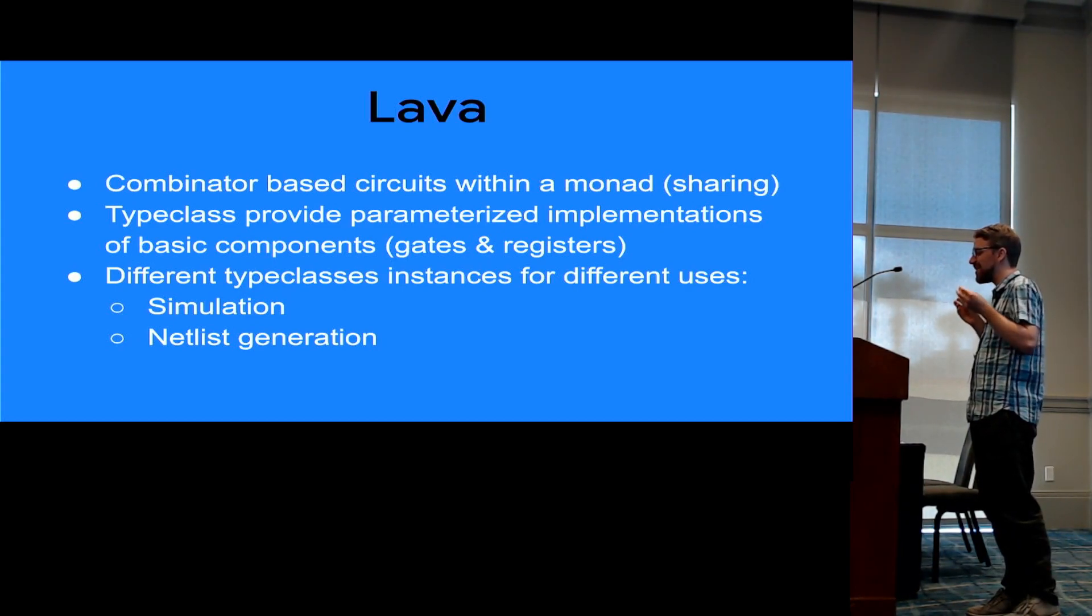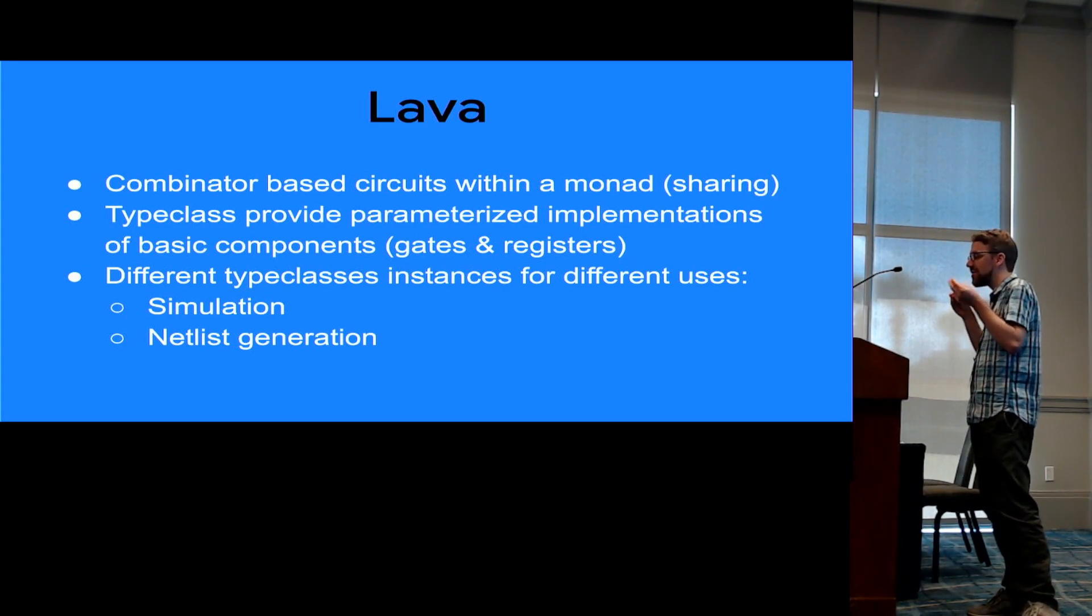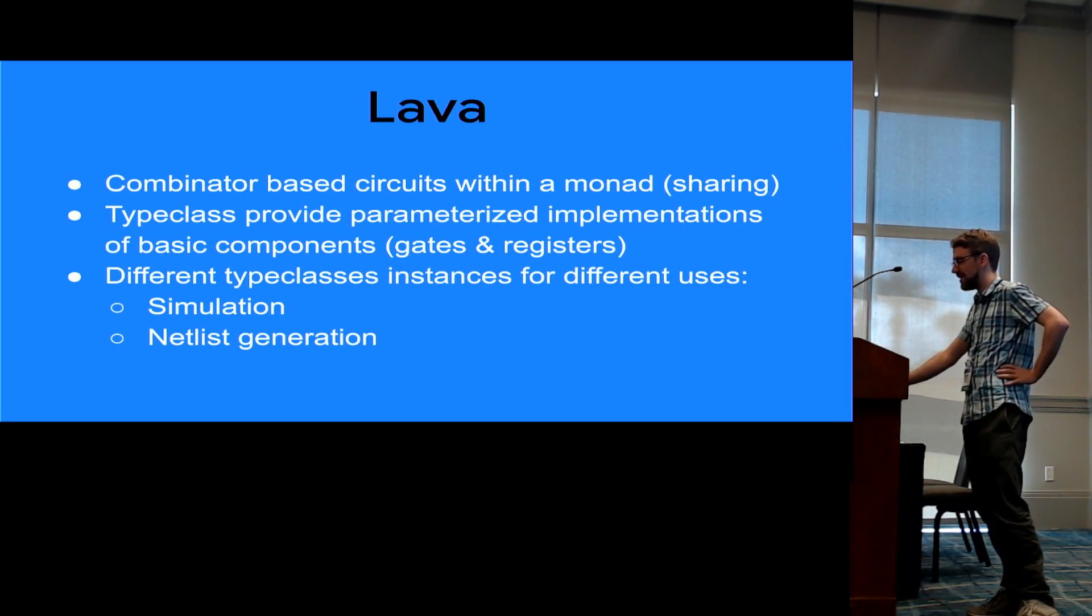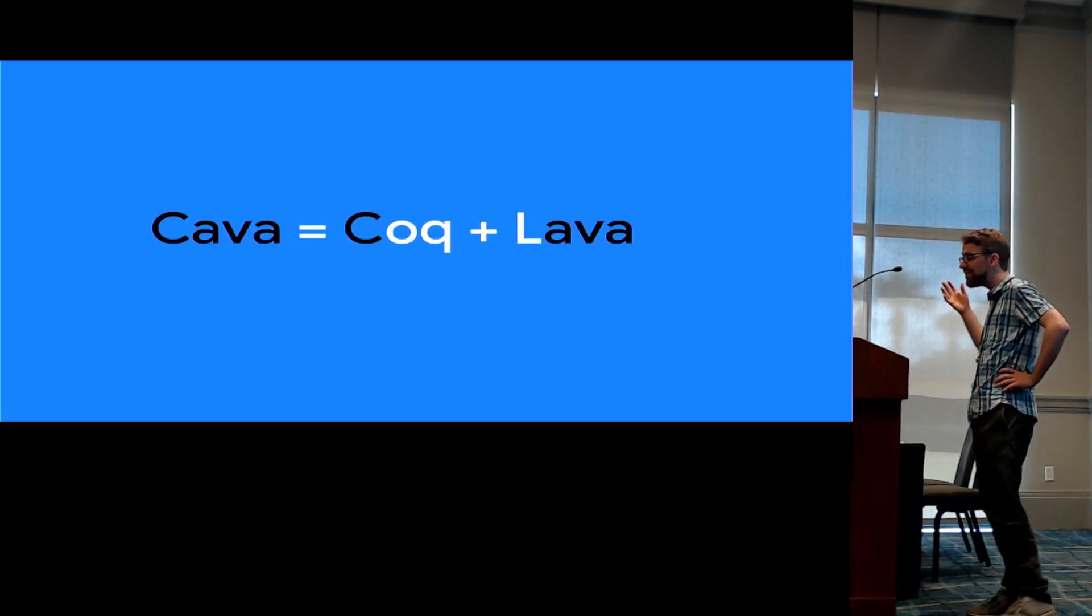And so it is a domain-specific language within Haskell, and based on using some primitive combinators, everything lives in the monad, and type classes provide a way to parameterize over the implementation of these primitives. And then the two main instances that you're using is one for simulation within Haskell, and the other to create netlists.